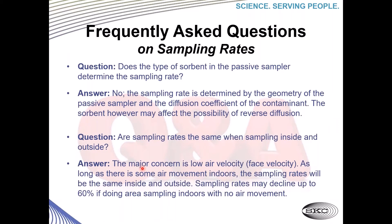Does the type of sorbent in the passive sampler determine the sampling rate? The answer is no. The sampling rate is determined by the geometry or the design of the passive sampler and the diffusion coefficient of the contaminant. However, the sorbent may affect the possibility of reverse diffusion, but it does not affect the sampling rate.